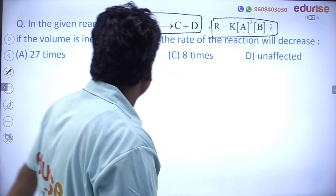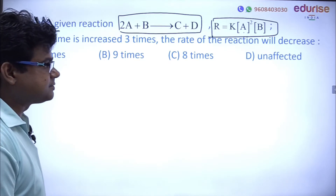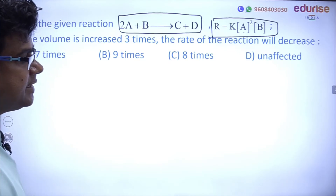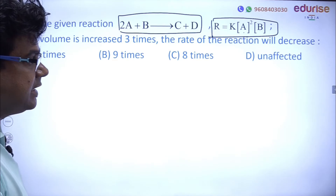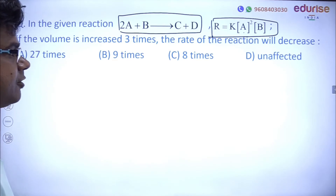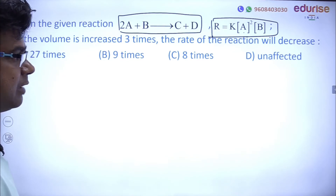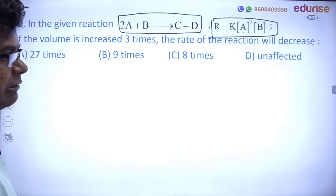If the volume is increased three times, the rate of reaction will decrease. When volume increases, concentration (molarity) decreases, so rate of reaction also decreases. We need to calculate how many times the rate of reaction decreases.